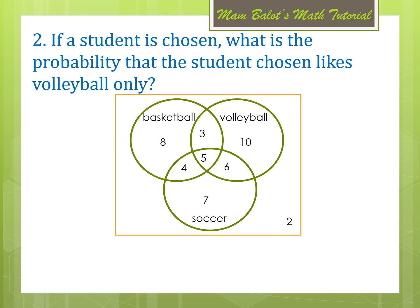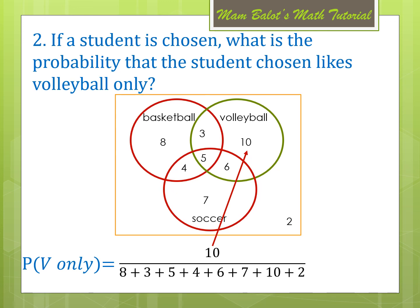Question number 2: if a student is chosen, what is the probability that the student likes volleyball only? We refer to students who love volleyball but not basketball and soccer — only the 10 students inside the volleyball circle but not overlapping with basketball and soccer. So, we have 10 over all the students, which is 10 over 45, reduced to 2 over 9.